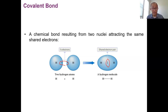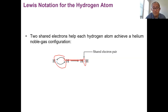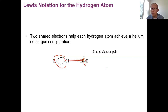Using Lewis structures showing the symbol and dots for electrons, you see each hydrogen giving one single electron and they have a pair shared between them — called shared electrons. After sharing, each hydrogen now has two valence electrons, achieving the noble gas configuration of helium. So both hydrogens are satisfied via sharing two electrons, achieving the helium noble gas configuration.